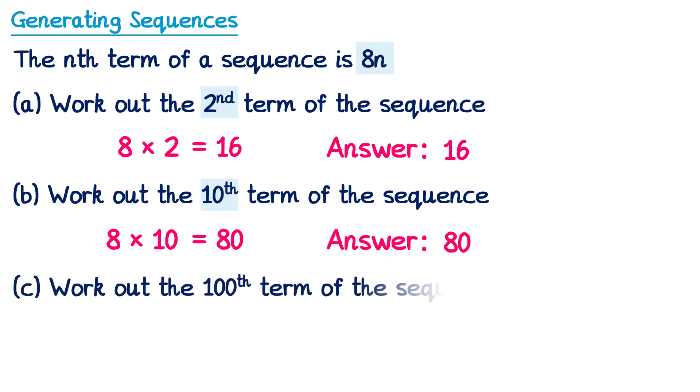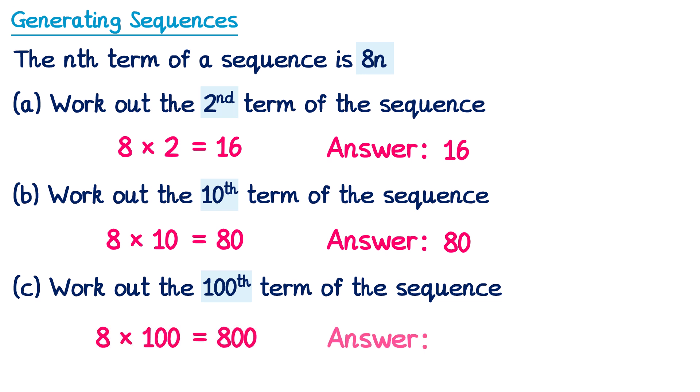And for part c of the question, work out the hundredth term. So if we want the hundredth term, we substitute n for 100. So it's 8 lots of 100, which is 800. So the answer is 800.